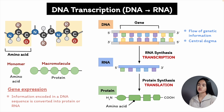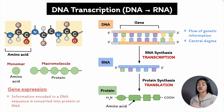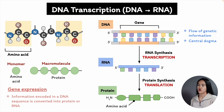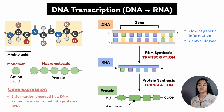This is known as the central dogma of molecular biology, named by Francis Crick. There are two major steps in gene expression that occur in all organisms: transcription and translation. Transcription is copying DNA into RNA, and translation is the synthesis of a polypeptide using the information in RNA, which we'll cover in the next lecture.